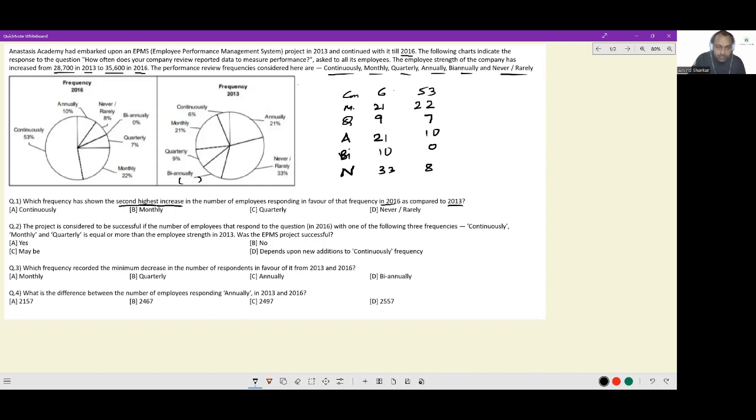Now, the question was second highest increase. Remember, not the percentage increase, it is asking for the second highest increase, the absolute increase. So technically, we should be finding out absolute figures, and then see where the greatest change has happened. But, given that this has definitely increased, 6% of a smaller number, 53% of a larger number.